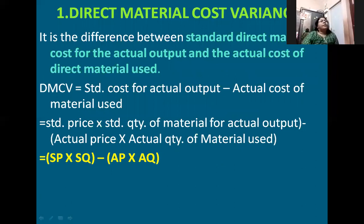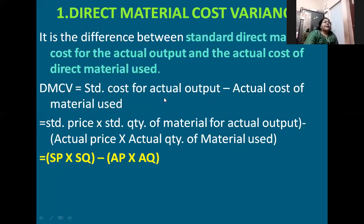Under material variances, we have direct material cost variance. It is the difference between the standard direct material cost for the actual output and the actual cost of direct material used. The formula is: standard cost for actual output minus actual cost of materials used, which equals SP × SQ (standard price × standard quantity for actual output) minus AP × AQ (actual price × actual quantity used). The short form is SP × SQ minus AP × AQ.